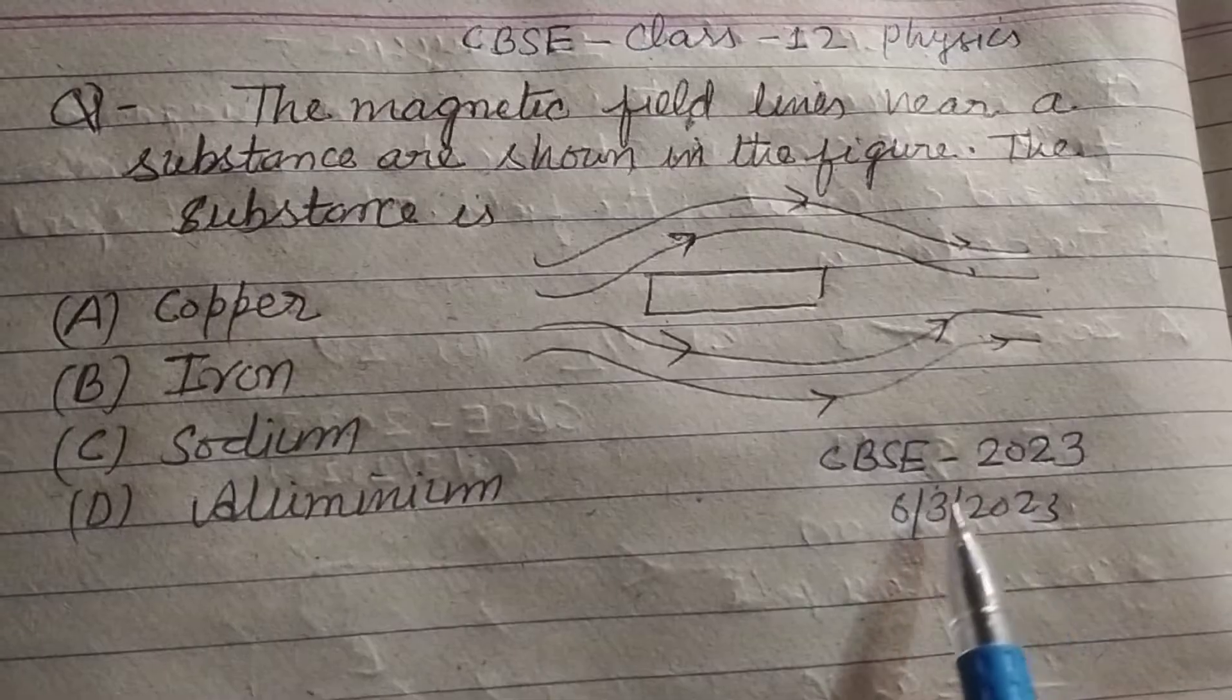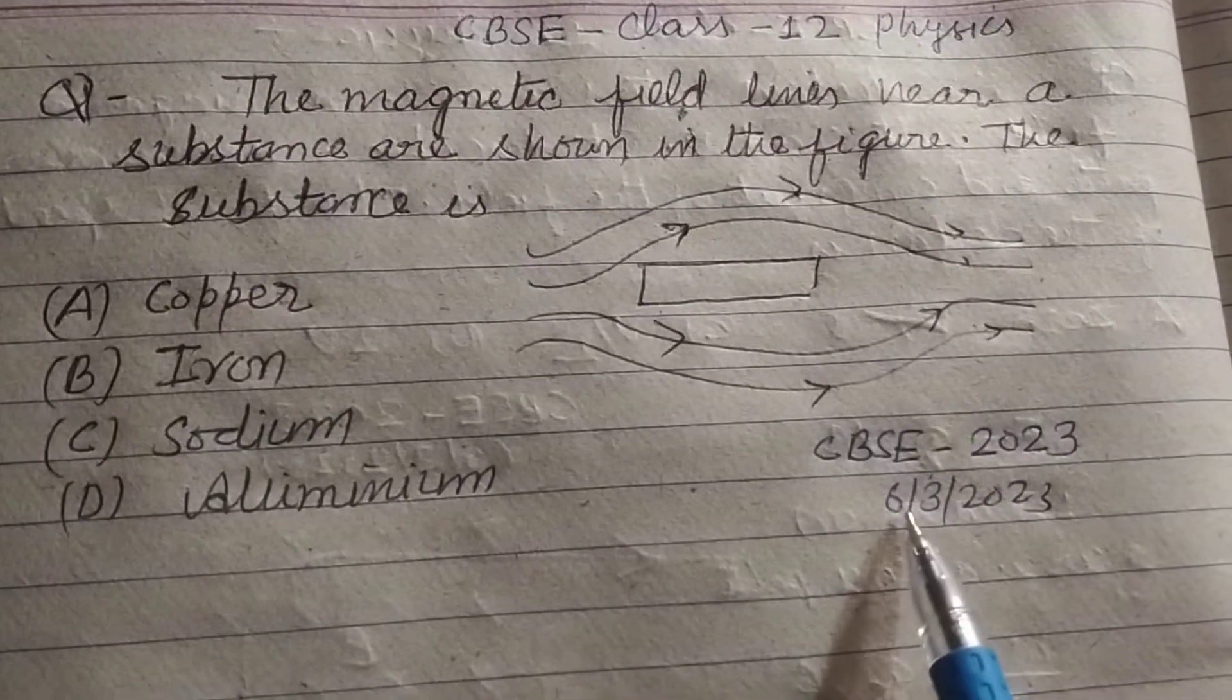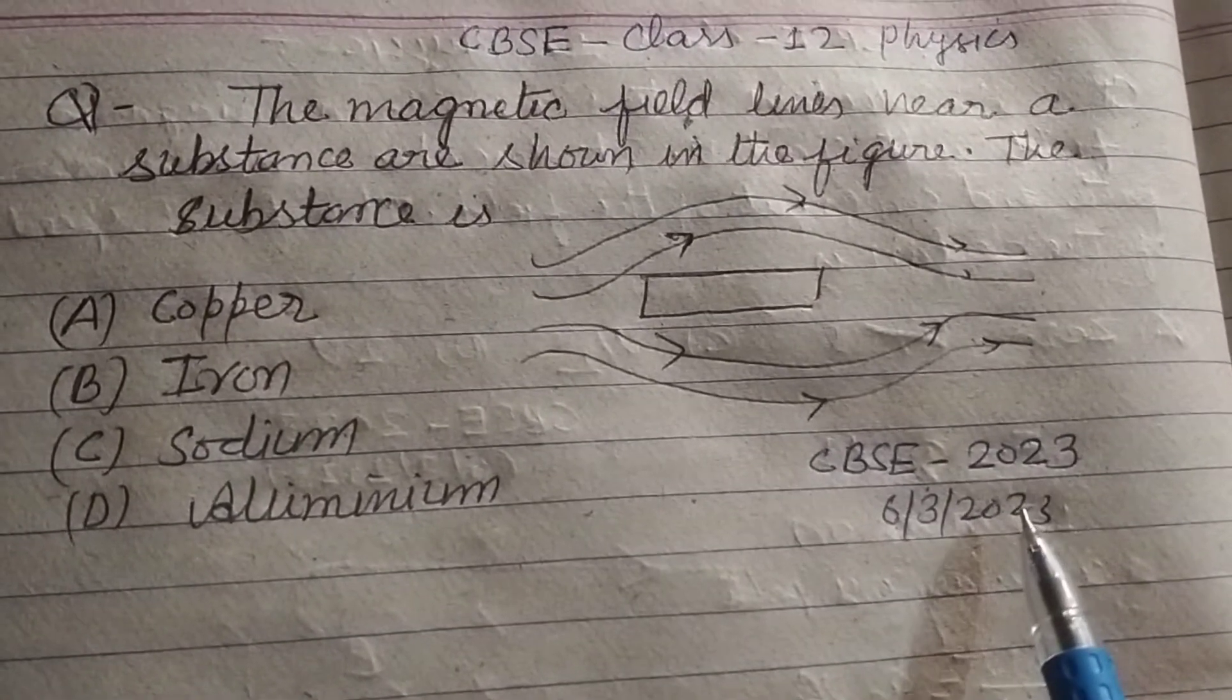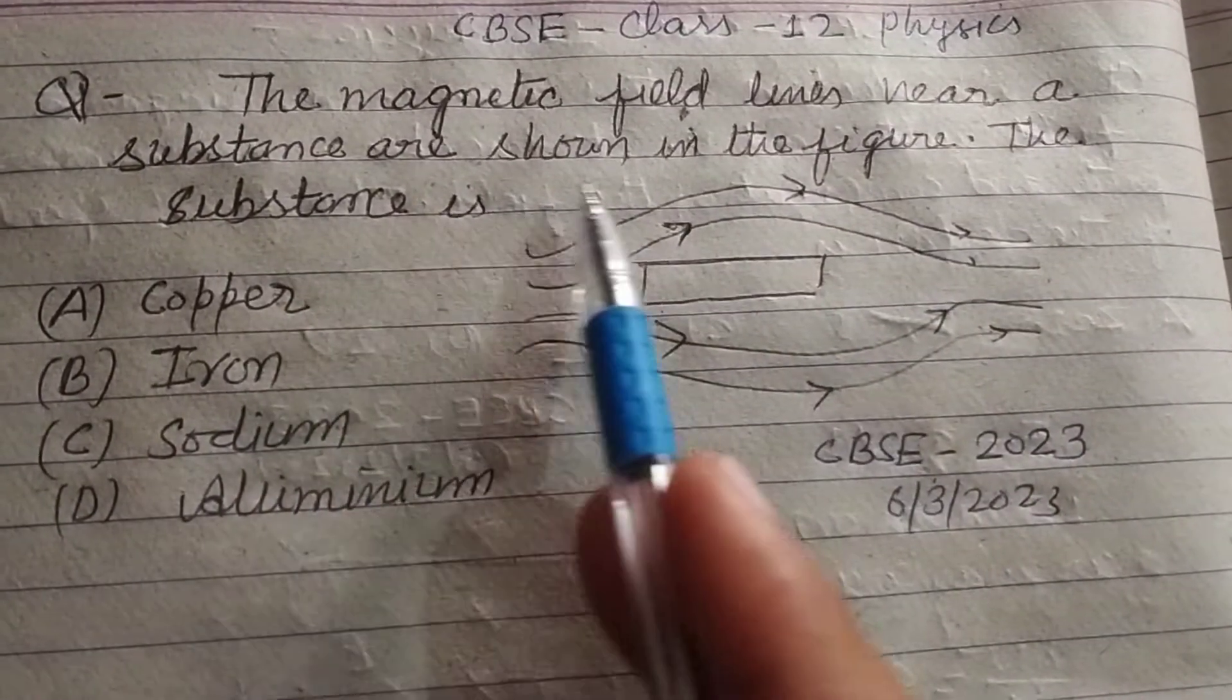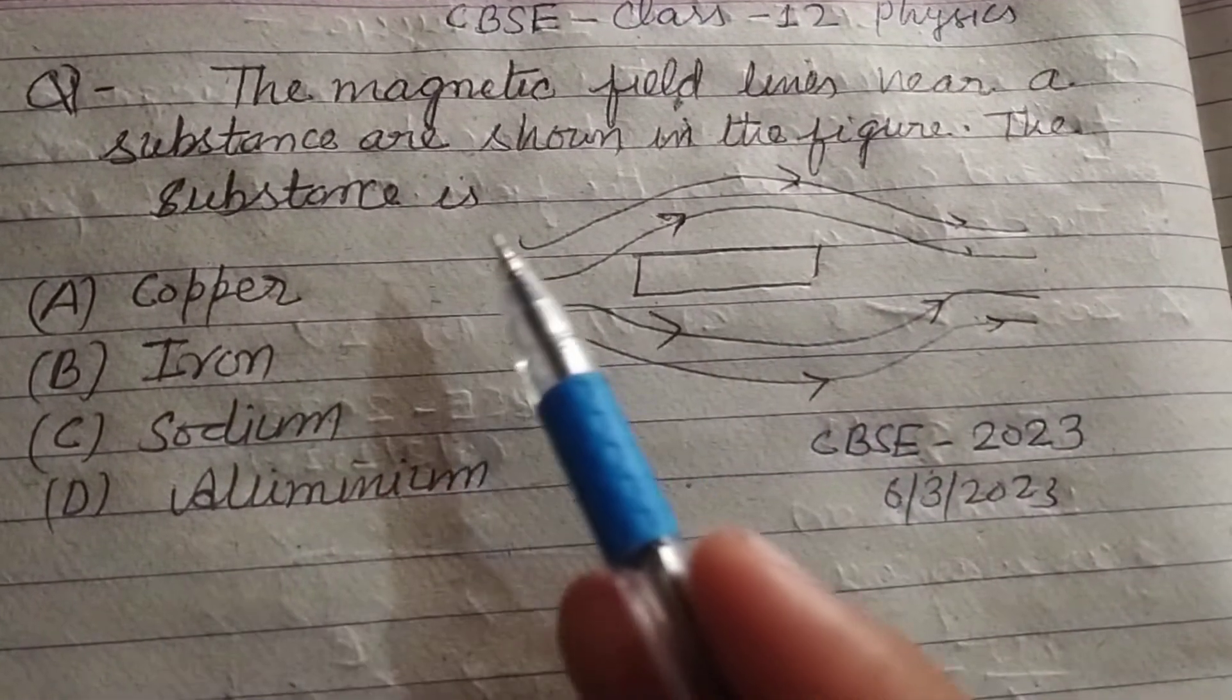Question from CBSE class 12 physics board paper held on 6 March 2023. The magnetic field lines near a substance are shown in the figure. The substance is: